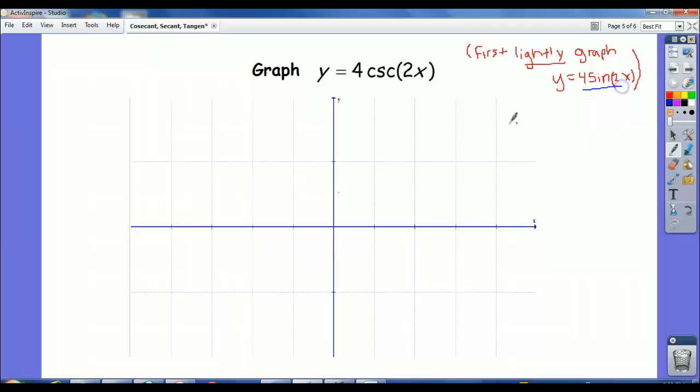So how do we graph this? Well, we know that the amplitude is equal to 4. We know the period would be 2 pi over b, which would be 2 pi over 2, or pi.